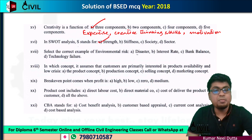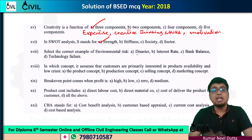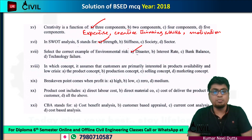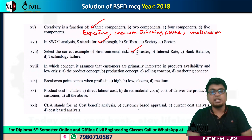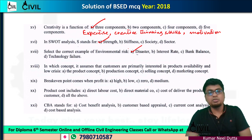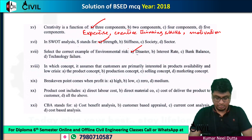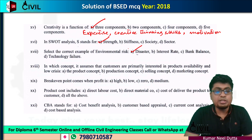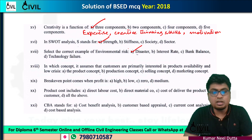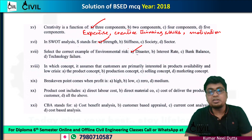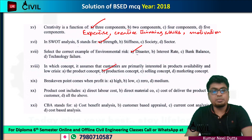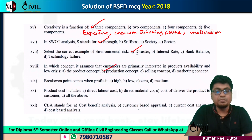Select the correct example of environmental risk. Next, number 18: in which concept does it assume that customers are primarily interested in product availability and low price? This is the production concept. So the correct option is B.